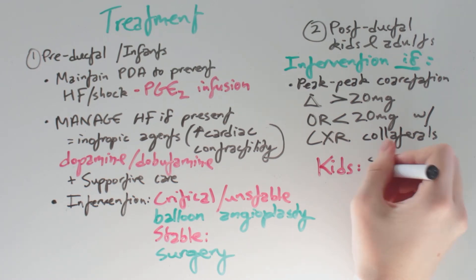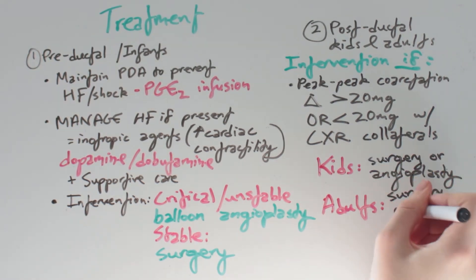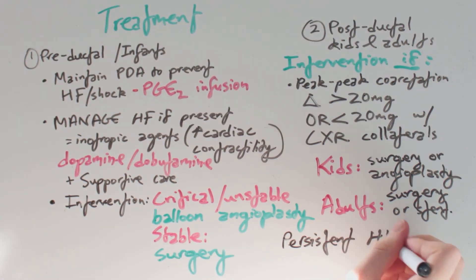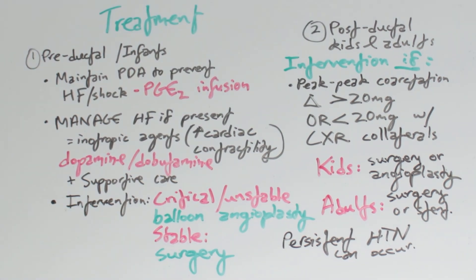In kids, intervention via surgery or angioplasty is recommended, while for adults we can perform surgery or stenting. Keep in mind that there is a risk of persistent hypertension even after intervention for coarctation.